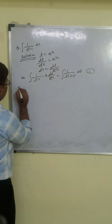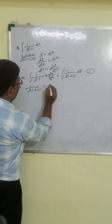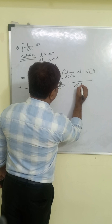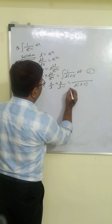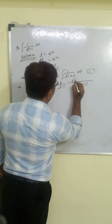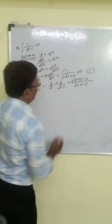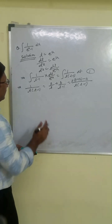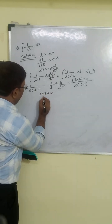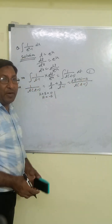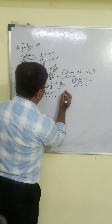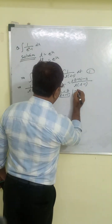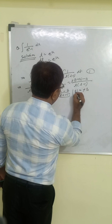Now with the help of partial fractions, we write 1 upon t into t minus 1 equal to A upon t plus B upon t minus 1. LCM is t(t-1), giving At minus A plus Bt. Taking t common: coefficient of t is A plus B, and constant term is minus A. Comparing numerators: A plus B equals 0, so A equals minus B. The constant term gives minus A equals 1, so A equals minus 1, and therefore B equals 1.